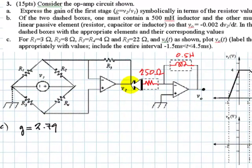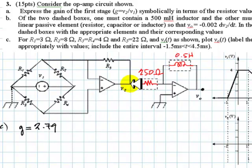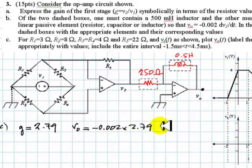And then whatever signal we put here at V2 will be multiplied by negative 0.002 and differentiated to put it at the output. So that means that V0 is going to be negative 0.002 times 2.79 that multiplies the derivative of this V1 with respect to time. The time derivative of V1, that's going to be the output.